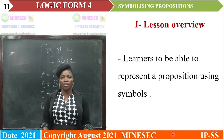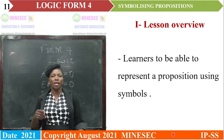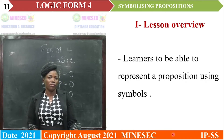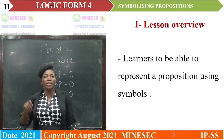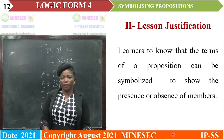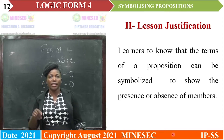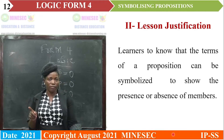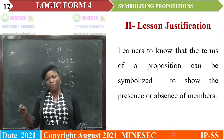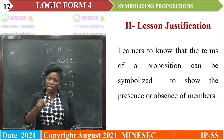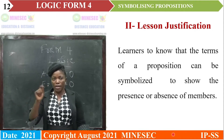Let us start with the lesson overview. Learners should be able to represent a proposition using symbols. Lesson justification: learners should know that the terms of a proposition — that is, the subject term and the predicate term — can be symbolized to show the presence or absence of members in that proposition.